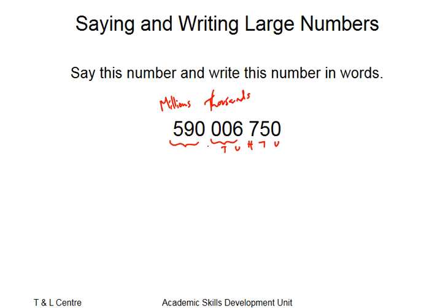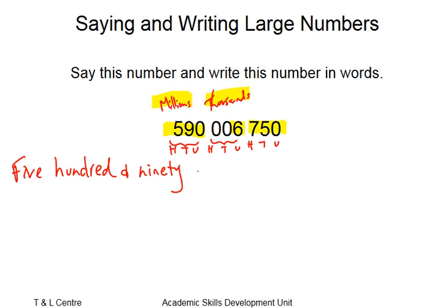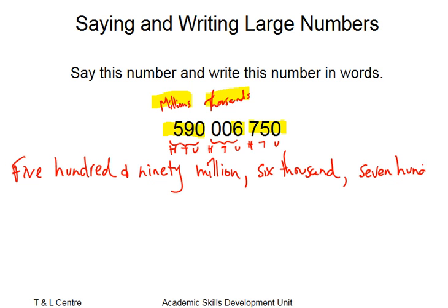And remember that units, tens, hundreds pattern exists along all of those groupings. So to say this number, it must be 590 million, 6,750. So putting that down, it's five hundred and ninety million, six thousand, seven hundred and fifty.